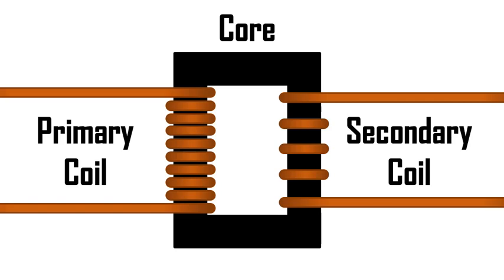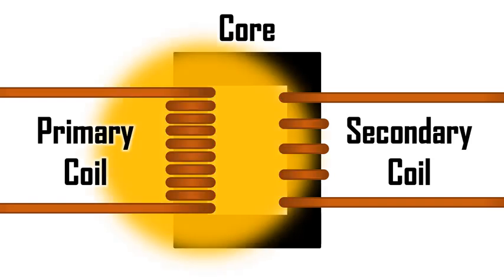The change in voltage occurs because of a process called electromagnetic induction. Electricity flowing through the coil on the primary side creates a fluctuating magnetic field. That fluctuating magnetic field interacts with the coils on the secondary side and induces an electrical current to flow.